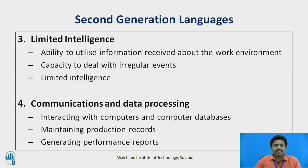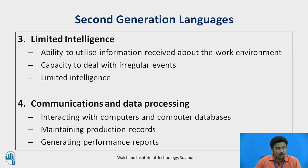Second generation languages also offer limited intelligence — the ability to utilize information received about the work environment to modify system behavior in a programmed manner. Instead of merely repeating the same motion pattern, the robot has the capacity to deal with irregular events during the work cycle in a seemingly intelligent way, though this intelligence must be programmed into the robot control. Additionally, these languages have provisions for interacting with computers and databases for keeping records, generating reports, and controlling activities in the work cell.